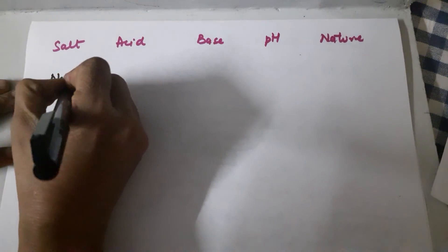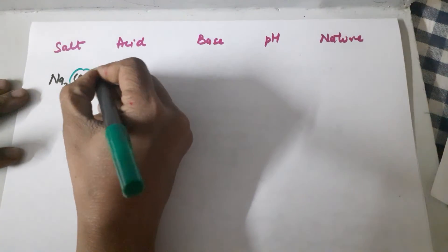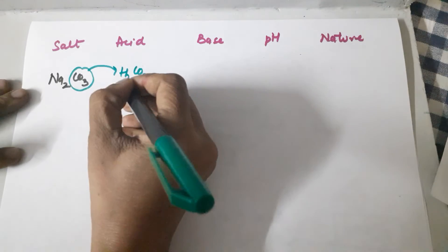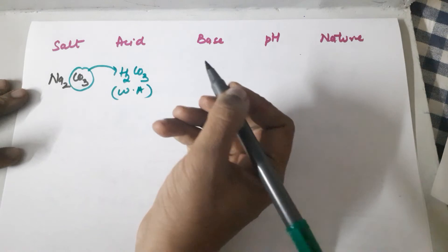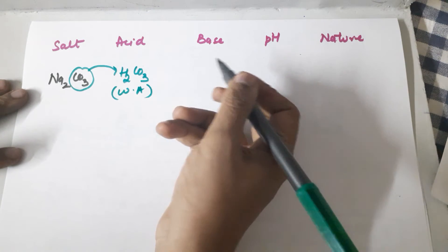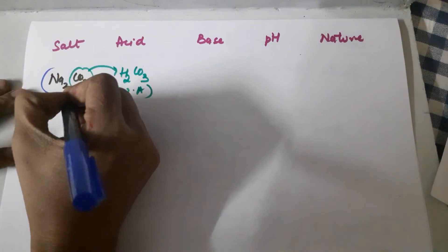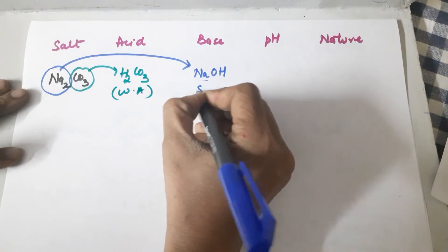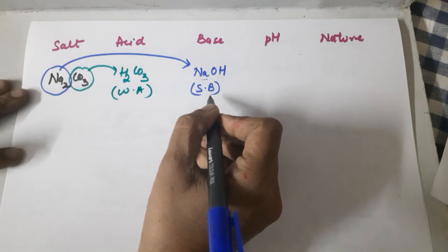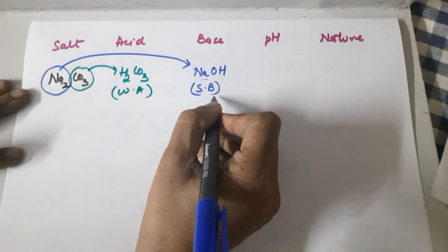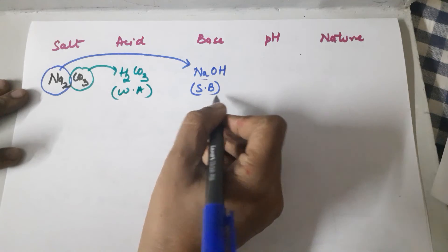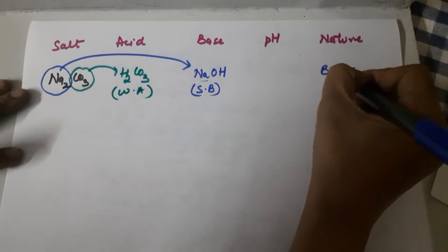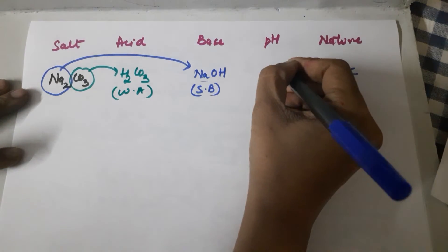Next: sodium carbonate, Na₂CO₃. Add H⁺ to CO₃²⁻ to get carbonic acid H₂CO₃ — a carbon-containing acid, so it is a weak acid. Add OH⁻ to Na⁺ to get NaOH — sodium is one of the most reactive metals, so this is a strong base. A weak acid and a strong base: pause the video and think about the nature of the salt. Since the base is stronger, the nature of the salt is basic, and the pH is greater than 7.